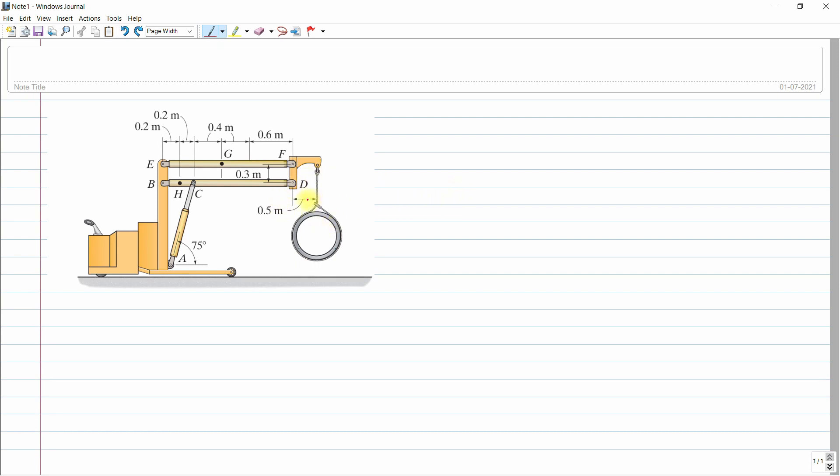So now we will start with the free body diagram. First we will do this rope and this pocketed block, pocketed block having 600 kg of weight.